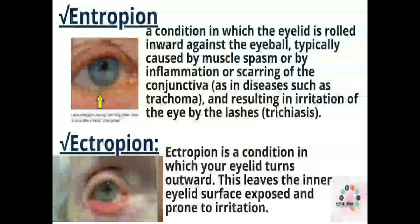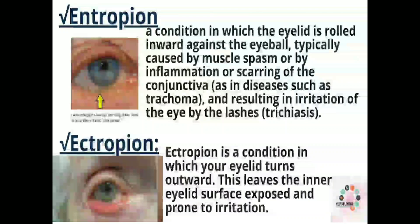Next is entropion — a condition in which the eyelid is rolled inward against the eyeball, typically caused by muscle spasm or by inflammation or scarring of the conjunctiva, as you can see in the picture, such as in diseases like trachoma, resulting in irritation of the eye by the lashes — called trichiasis.